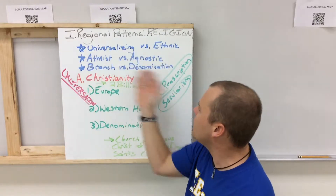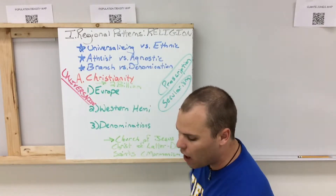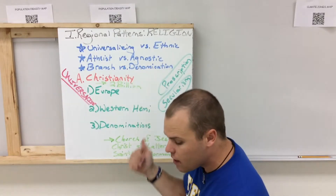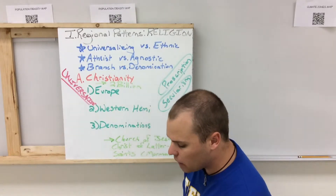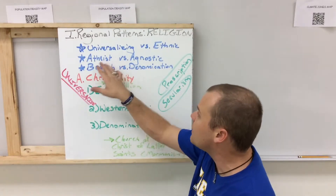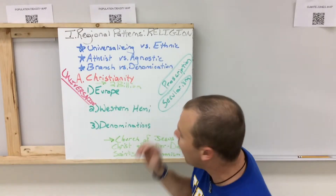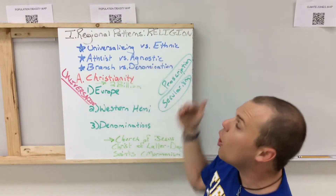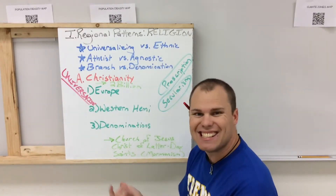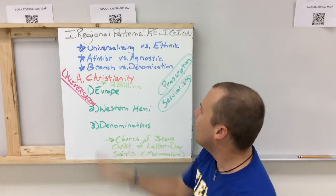The next thing I want to differentiate between is atheistic and agnostic. These are people that do not have a religion. Atheists believe that there is no God, that God does not exist. Agnostics believe that nothing can be known about God, whether he exists or not — so no God, and then we're not really sure.